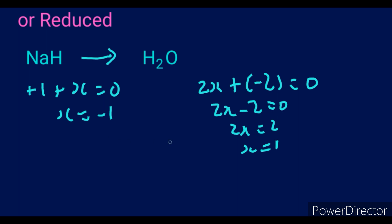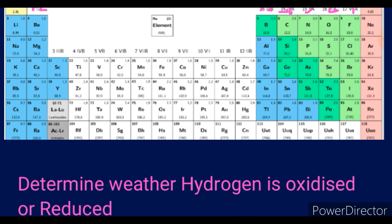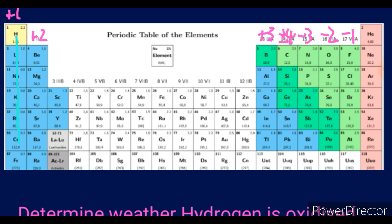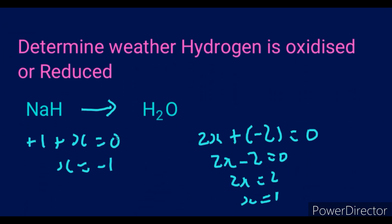You might find it odd that hydrogen has oxidation number −1, since normally it's +1. Here is an important rule: H is always +1 everywhere except in metal hydrides — like sodium hydride. Every time we have a metal hydride, the charge of hydrogen is −1, not +1. Memorize that.